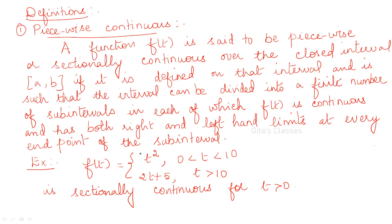At the end points, you must have both left and right hand limits. For example, consider 0 to infinity: from 0 to 10, the function is t squared, and greater than 10, it is 2t plus 5 — while at the point t equal to 10, it is not defined. This function is an example of piecewise continuous or sectionally continuous.